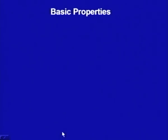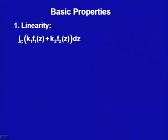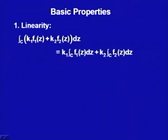The contour integral satisfies certain basic properties — similar to what we had seen in the first case. The first is linearity: if k₁ and k₂ are any two real constants, and f₁ and f₂ are any two complex functions defined on a complex variable, then the contour integral of k₁f₁(z) + k₂f₂(z) equals k₁ times the contour integral of f₁(z) plus k₂ times the contour integral of f₂(z). We can show this easily using the definition.